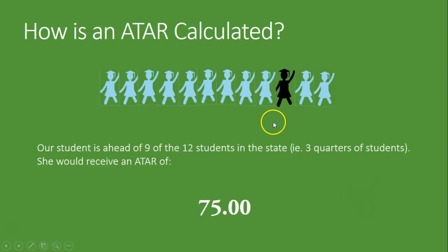If we look at this distribution here, let's say there's only 12 students in the state. Our student is the third best, but we don't actually count from the top. We count from the bottom. We say how many students have you done better than? You've done better than nine students out of twelve, so you get an ATAR of 75.0. 75% of students have not done as well as you. That's why we don't have ATARs of 100. 99.95 is the very highest ATAR that they give out. They also round this off to the nearest 0.05.